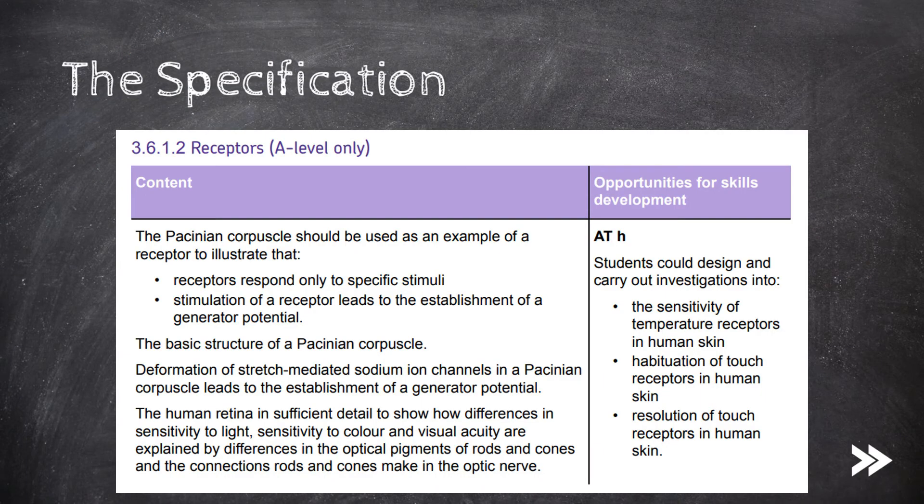Here's what we've got to know. The SPECT wants us to know about a specific type of receptor, the Pacinian corpuscle, which should be used as an example of a receptor to illustrate that receptors only respond to specific stimuli and that the stimulation of a receptor leads to the establishment of a generator potential. We should also be familiar with the basic structure of a Pacinian corpuscle. It wants us to know how a generator potential is established in terms of the deformation of stretch-mediated sodium ion channels.